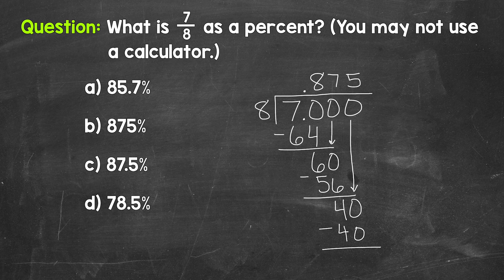Subtract, 40 minus 40 is 0. So we have that clean cut 0 there at the bottom. And nothing else to bring down within our problem. So we are done. 7/8 equals 0.875.